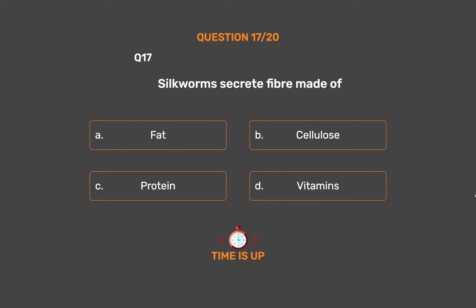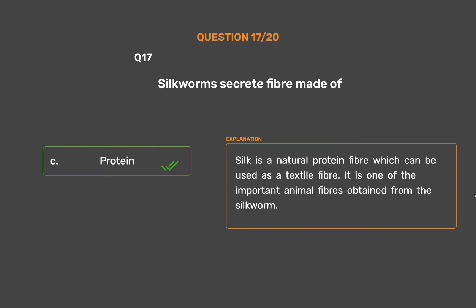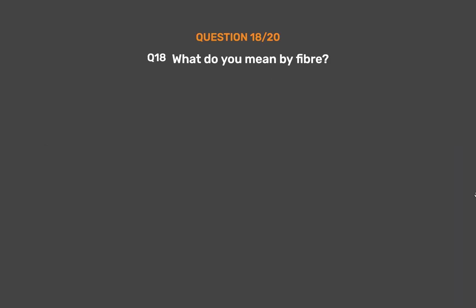The correct answer is Option C, Protein. Silk is a natural protein fiber which can be used as a textile fiber. It is one of the important animal fibers obtained from the silkworm.